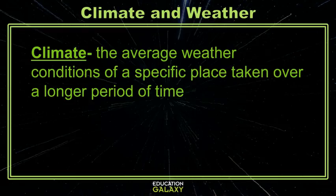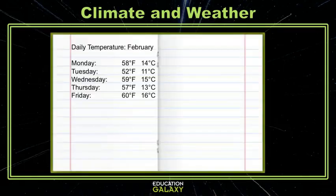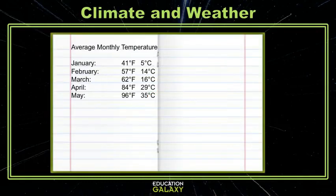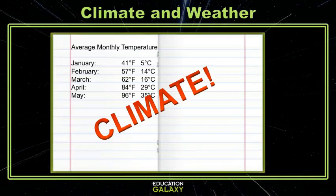Let's take a look at some examples. Let's say that you're in class and you've been assigned to check the thermometer every day and log the temperature in your journal — that's checking and recording the weather. But let's say you look at your data and average all of your temperatures for February together, and note that the average temperature every day for your school was 57 degrees Fahrenheit or 14 degrees Celsius. That's part of your specific location's climate.